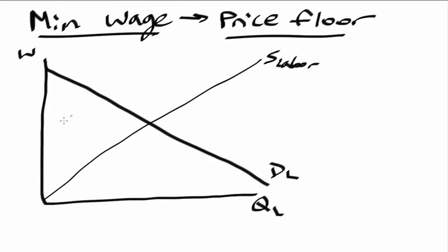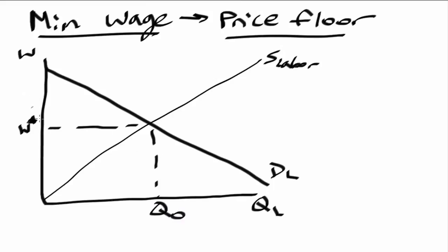Now let's look at where the original equilibrium occurs, which is where supply intersects demand. Supply intersects demand at this point, so this is going to be W star, and then this is going to be Q0. Let's say that W star is equal to 10, and Q0 is 65. That means at the original equilibrium wage of 10, there would be 65 people willing to work at that rate.